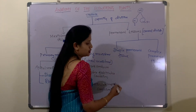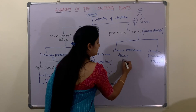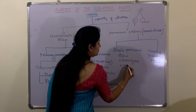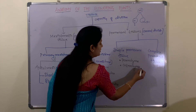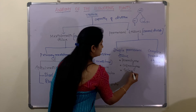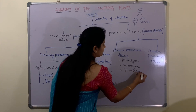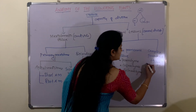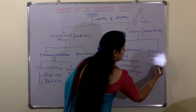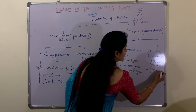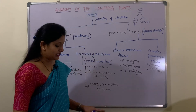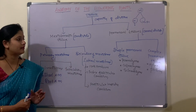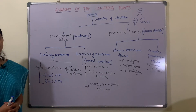Under simple permanent tissues we will be studying parenchyma, colenchyma, and sclerenchyma. Under complex permanent tissues we will be studying xylem and phloem. So these are the different types of tissues present in a plant.